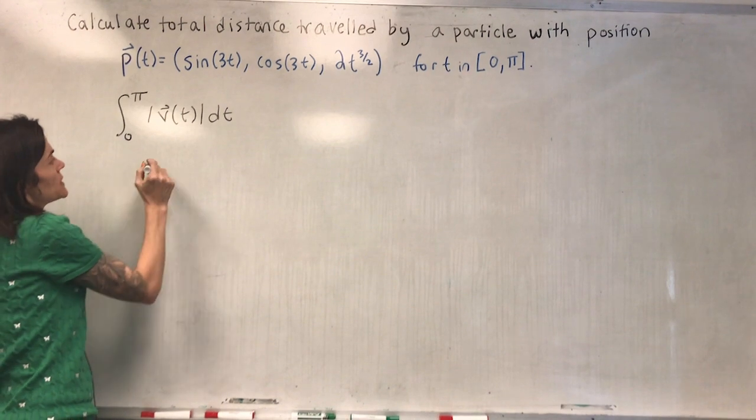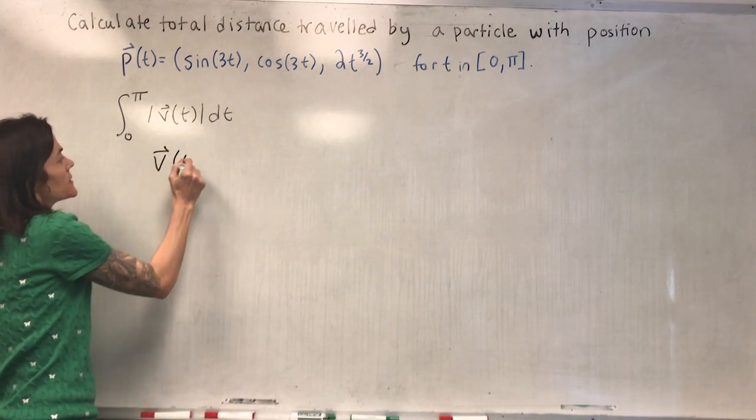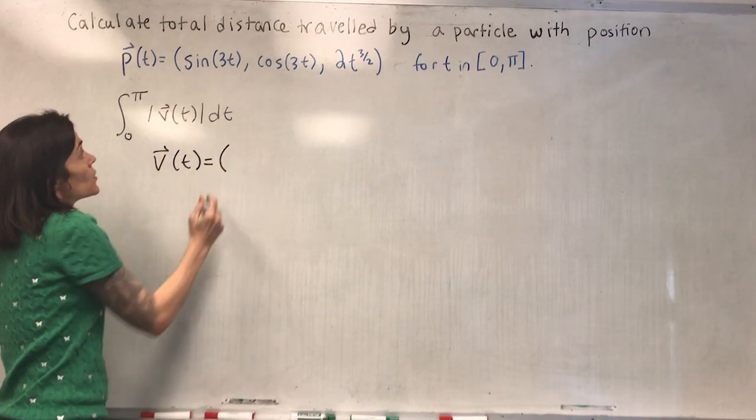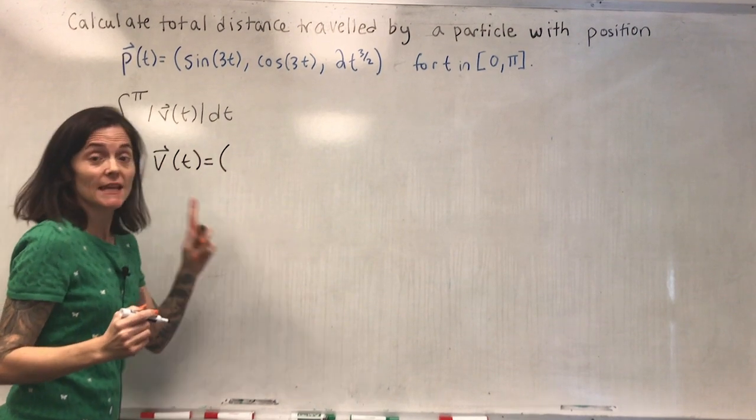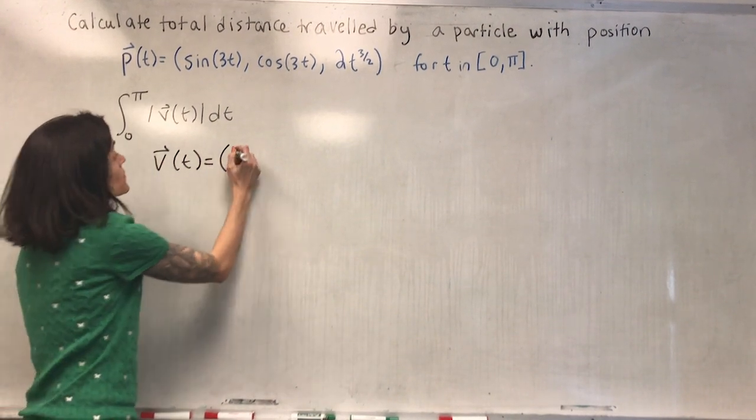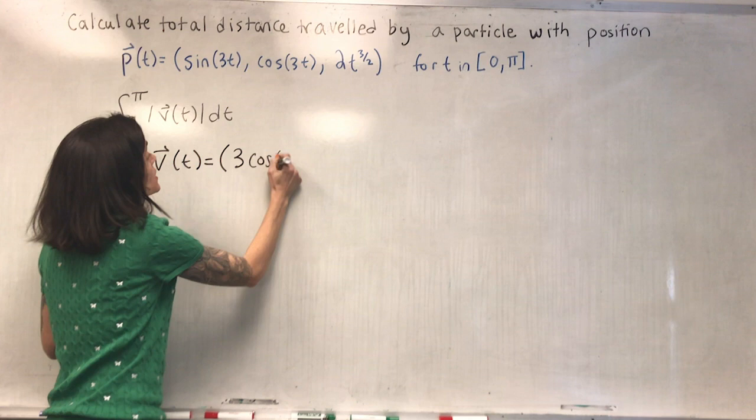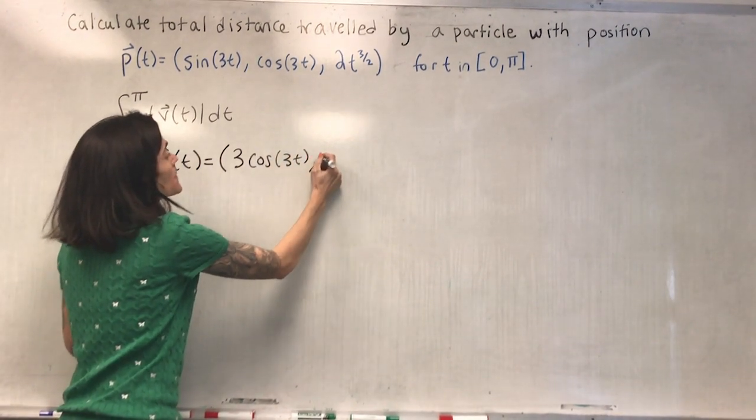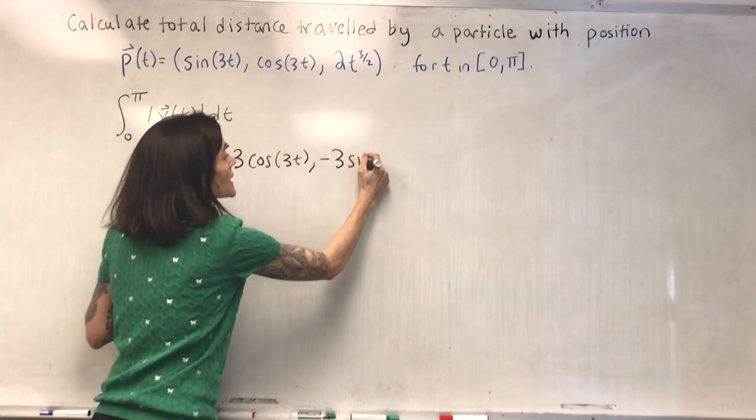The first thing we need to do is calculate the velocity. We differentiate each component. So the first component, we get three cosine of three t, then we get minus three sine of three t.